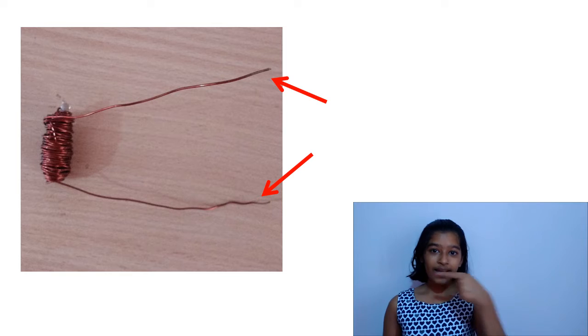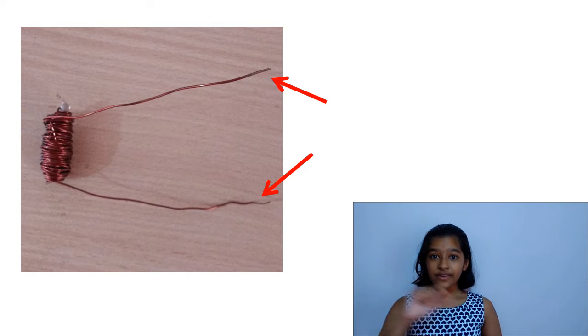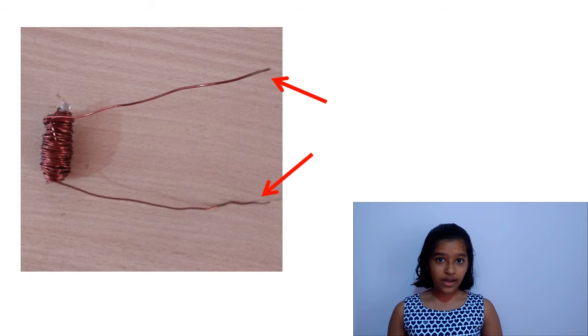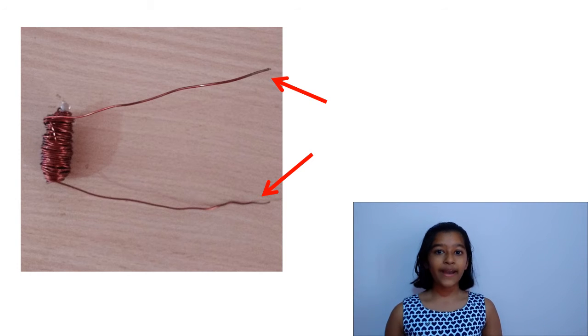This is how my electromagnet looks like. Now take a knife and scratch off the enamel from both sides of the enameled copper wire. These are the two ends which we will join with the battery.